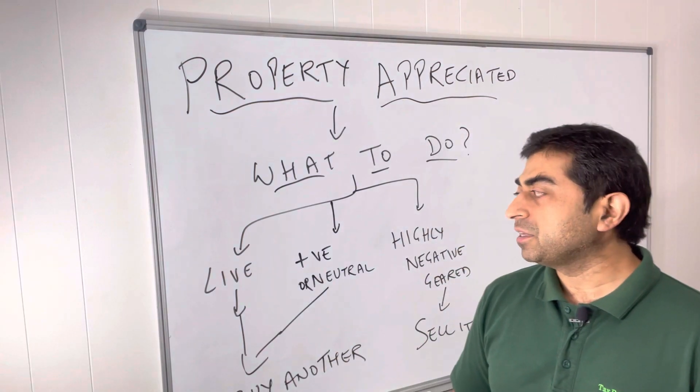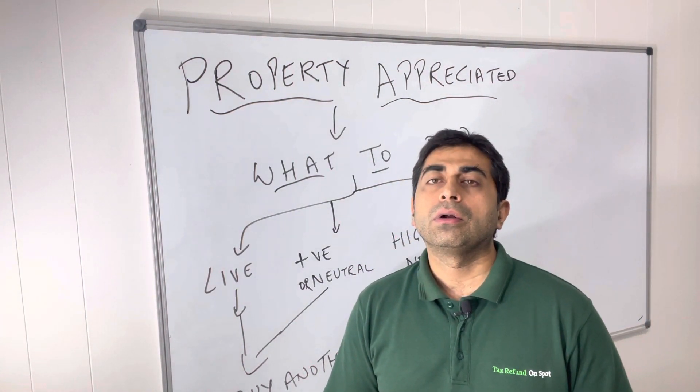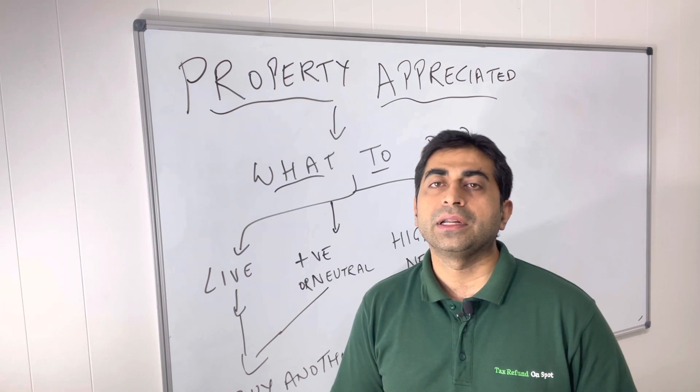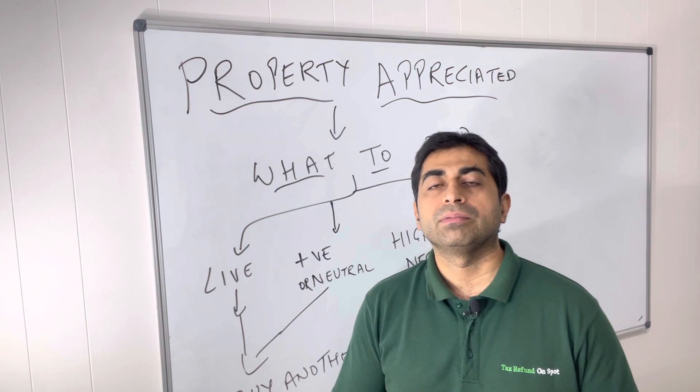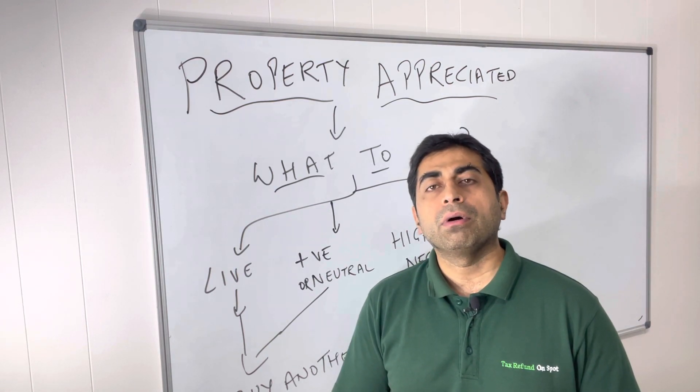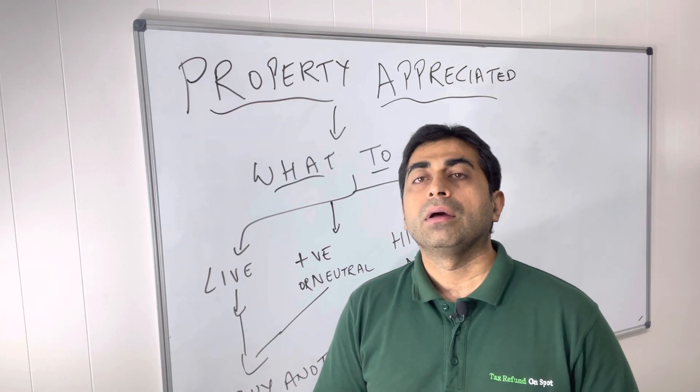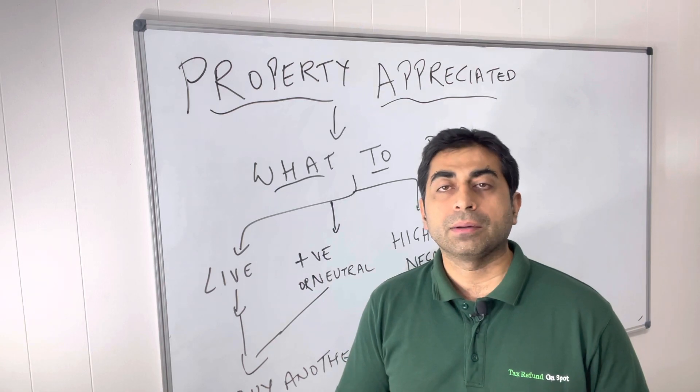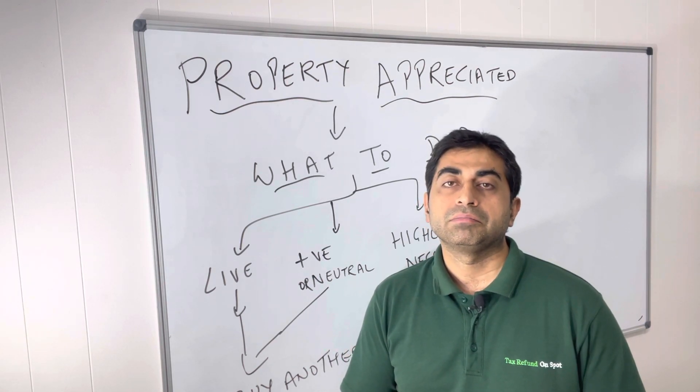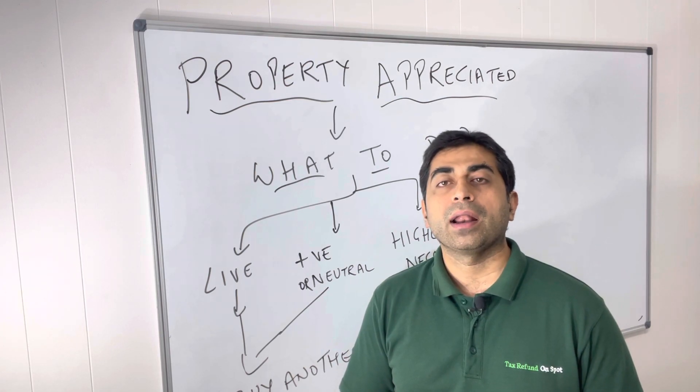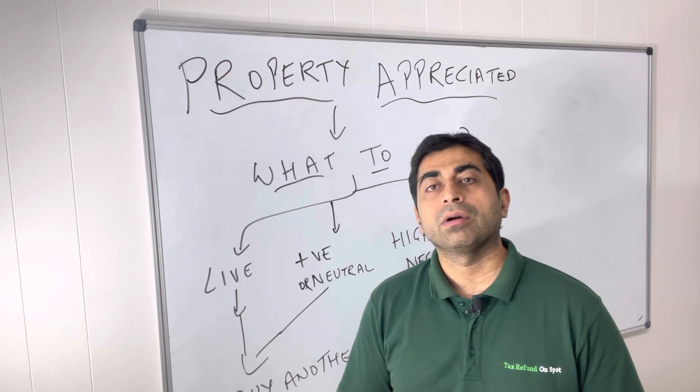Now, what happens if the property is highly negative? Highly negative means your total property expenses in a year are about $30,000, but rent is only $15,000 or $20,000. So you are paying $10,000 or $15,000 a year just to hold that property. I would recommend, it's up to you, but I would recommend this is the best time to sell. Sell in the market and maybe buy another one with neutral or positive cash flow property.